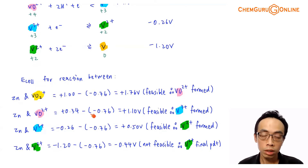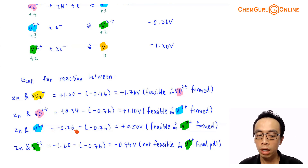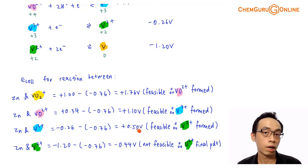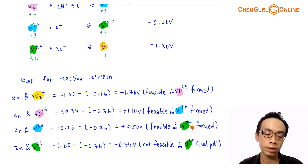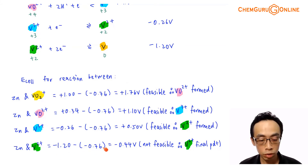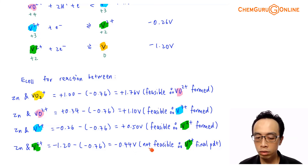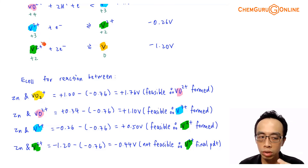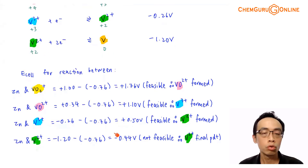Next, we determine whether zinc can reduce V3+ to V2+: E-cell = −0.26 V − (−0.76 V) = +0.50 V — positive, so this reaction is feasible. Finally, for reducing V2+ to vanadium metal: E-cell = −1.20 V − (−0.76 V) = −0.44 V. This negative E-cell means the reaction is not feasible, so zinc cannot reduce vanadium all the way to the metal, and V2+ is the final product.